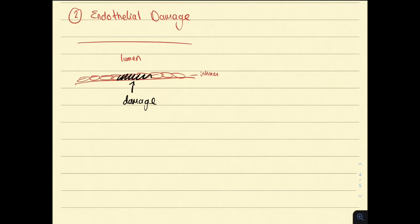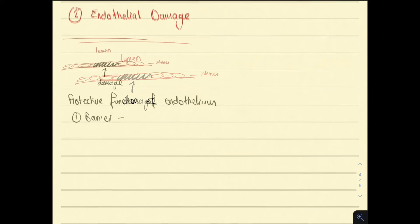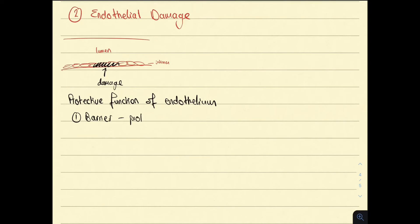It would be good to discuss the protective roles of the endothelium, which are similar to that of the basement membrane we've previously discussed in primary hemostasis. So first, the endothelium is a barrier. It protects the sub-endothelial collagen and tissue factor.